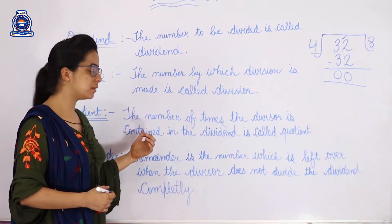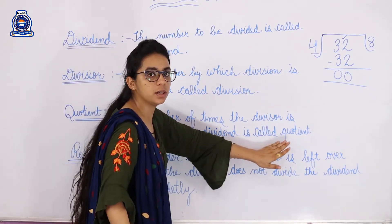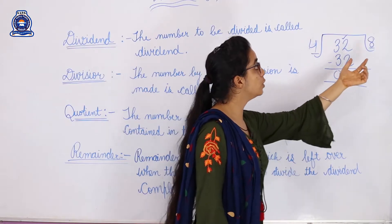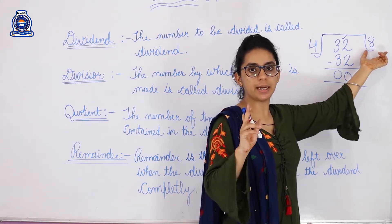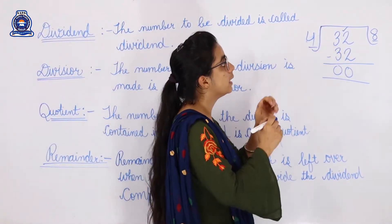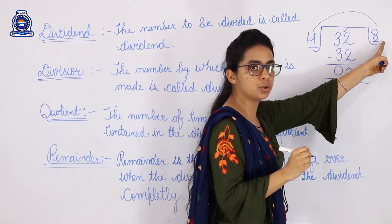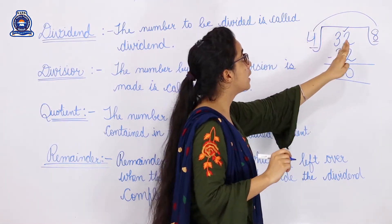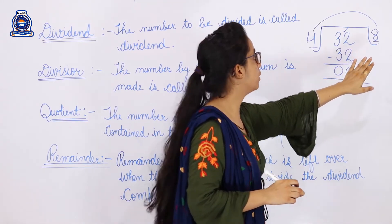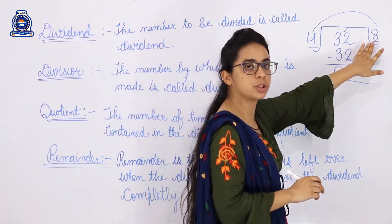The next term is quotient. The number of times the divisor is contained in the dividend is called the quotient. Here, if we multiply divisor and quotient: 4 eights are 32 — it means 32 is 4 times 8. So 8 is the quotient. The number of times the divisor is contained in the dividend is the quotient, so here the quotient is 8.